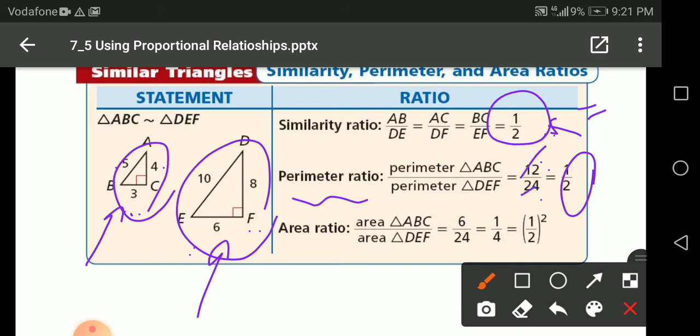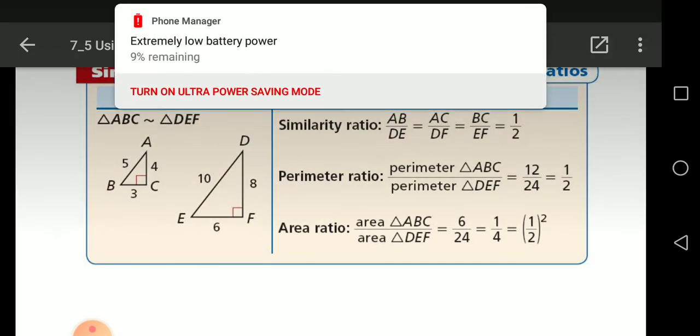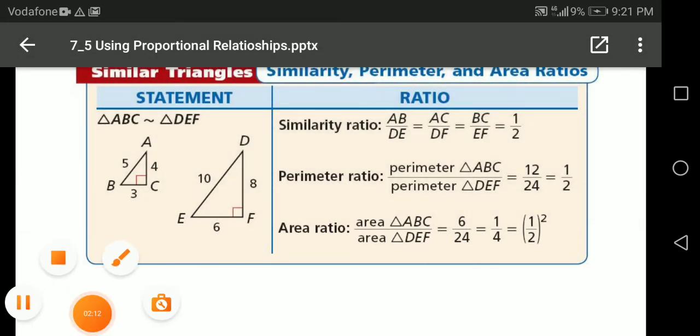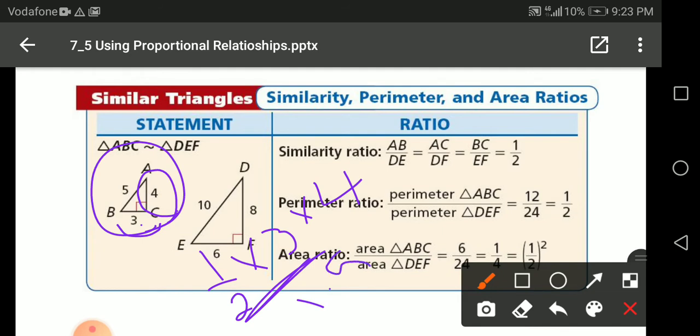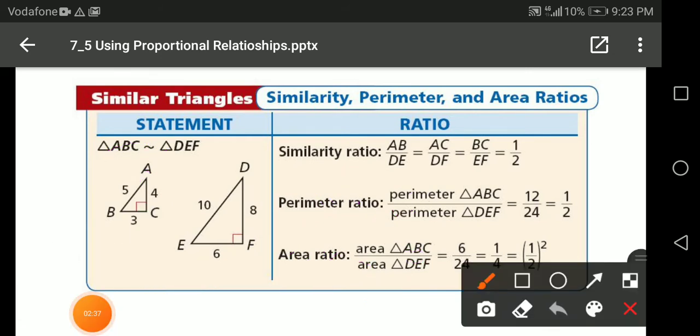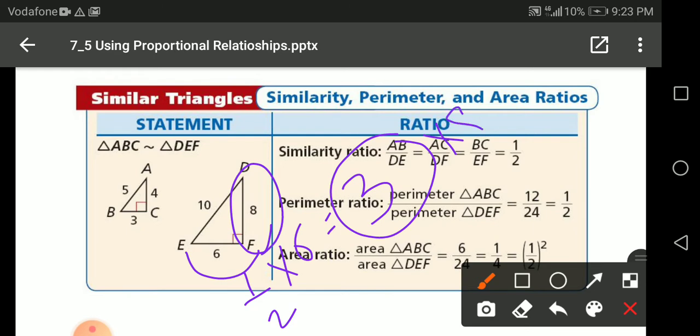And also the area of ABC. The area of the triangle, half base times height. Half the base here, the base is BC, half base times height, the height here is 4. So half of 3 is 1.5, 1.5 times 4 gives you 6. What about the other one? Half base times height. Half of 6 is 3 times the height 8 is 24.